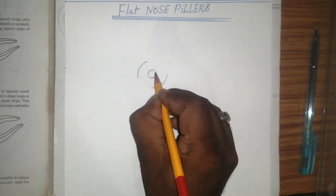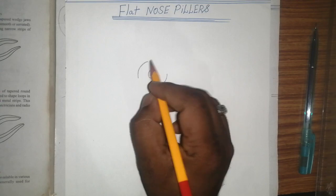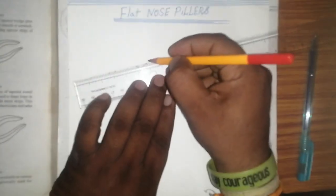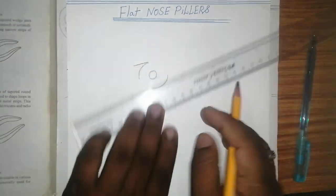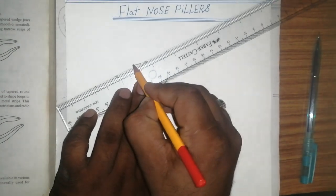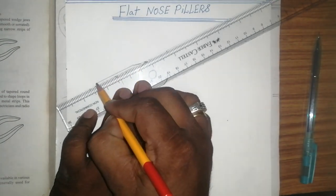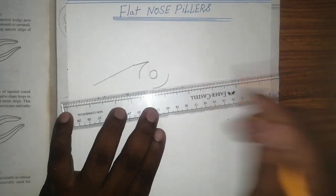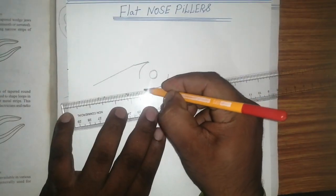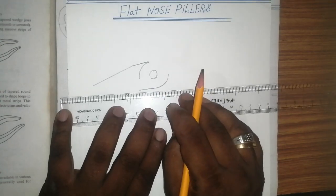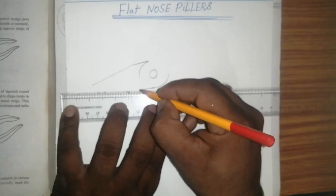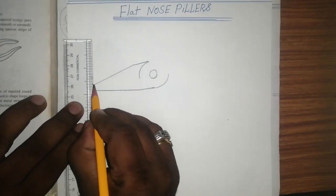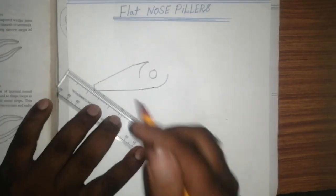Draw one more circle here. After that, using this scale, take a little bit of taper and join into this position. Then take a little bit of style and a little bit of curve, and join this line.